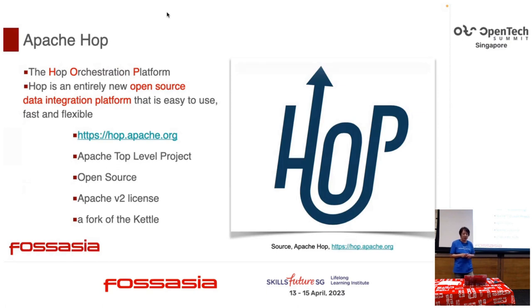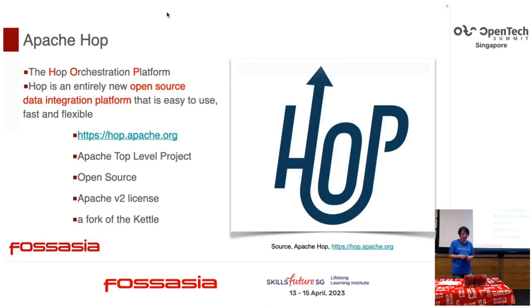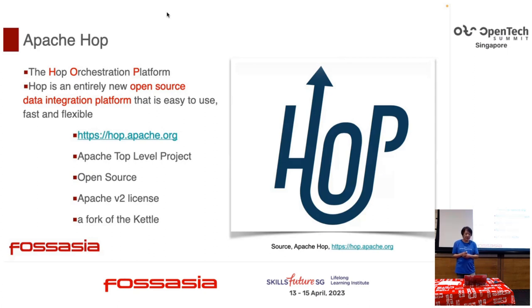What is Apache Hop? Apache Hop is the short name of the Hop Orchestration Platform — H-O-P. This is an open source data integration platform. It's easy to use, it's free. It's an Apache top-level project with Apache License Version 2. This is a fork from Kettle.